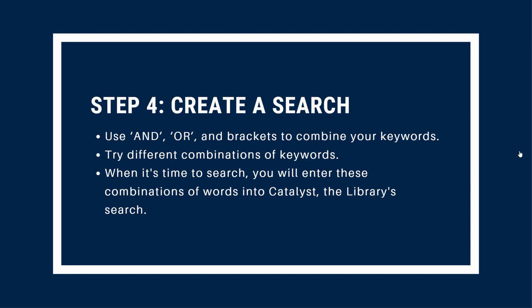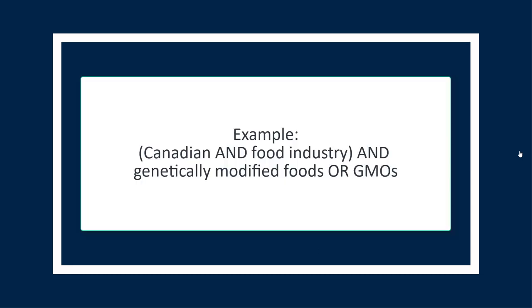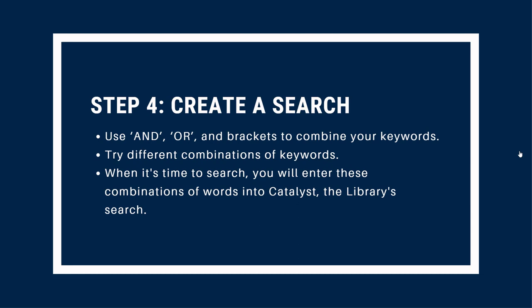You can also use brackets along with Boolean operators to make your search more specific. Just like a math equation, in a search any terms enclosed in brackets are searched first. For example, using brackets around two words connected by AND, followed by two words connected with OR, tells the software that you want all of the words in the brackets and one of two words that follow the brackets. Try different combinations of keywords — take some time and write them down, making sure you have a word that addresses each idea. When it's time to actually do your search, you'll already have a list of words ready to go.